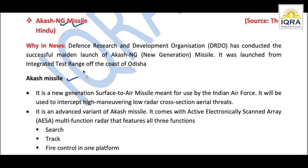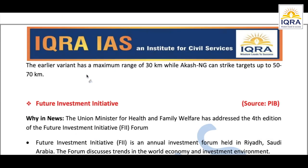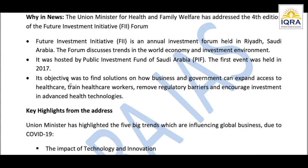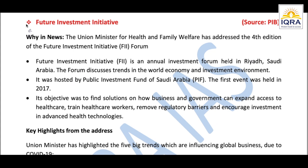The earlier Aakash variant has a maximum range of 30 kilometers, while the new generation Aakash NG can strike targets up to 50 to 70 kilometers. It is indigenously developed. Summary: we covered Aakash Missiles, the IGMDP program, and the improved range of the new generation variant. Missiles are an important topic for Science and Technology — make sure to thoroughly prepare all missile-related news.